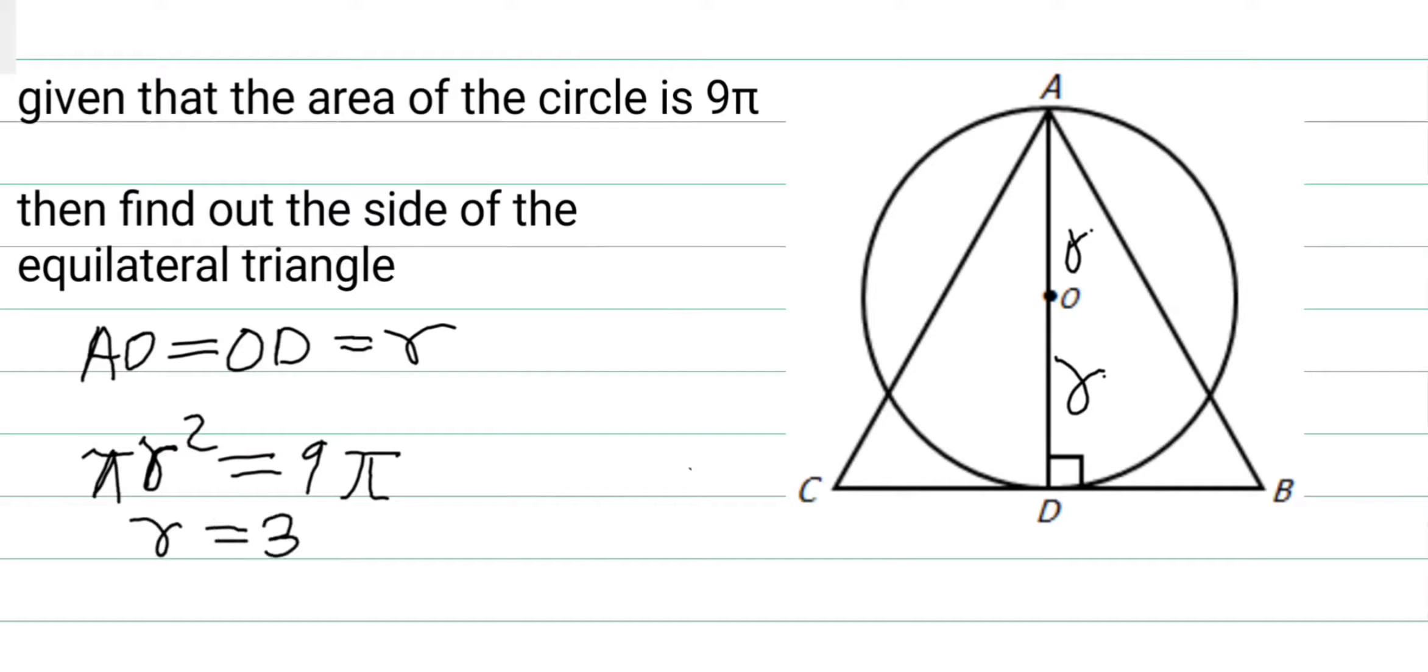So if R equals 3, then AD equals 2R. But we know that this is equation 1.